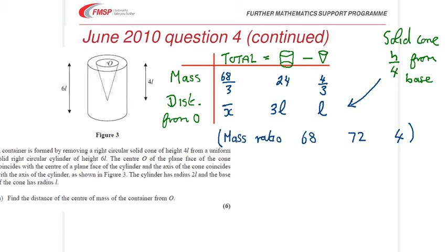So all we're going to do now is take moments about the top plane face. And what we've got then is 68 times x bar is 72 times 3L minus 4 times L. Be careful because that cone has been removed from it, so it's a minus there. And when you tidy all that up, you get x bar equals 53L over 17. So you might like to pause the video and just check you can get that.